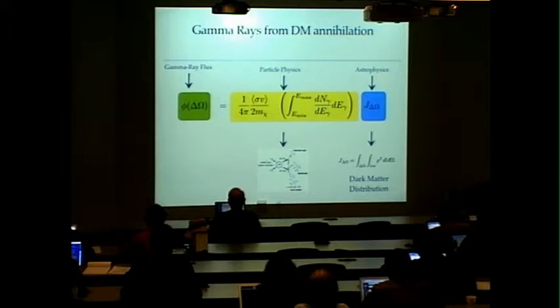So the gamma ray flux expected from dark matter annihilation comes from two factors. One from the particle physics that basically depends on the cross-section, on the annihilation cross-section and the mass of the dark matter particle and also the spectrum of photons in which these particles are being annihilated that can be fermions, bosons or other particles.